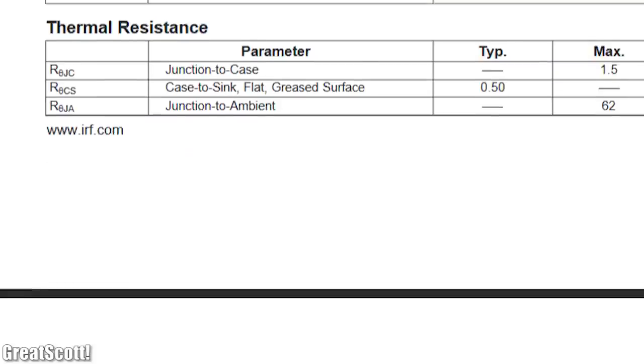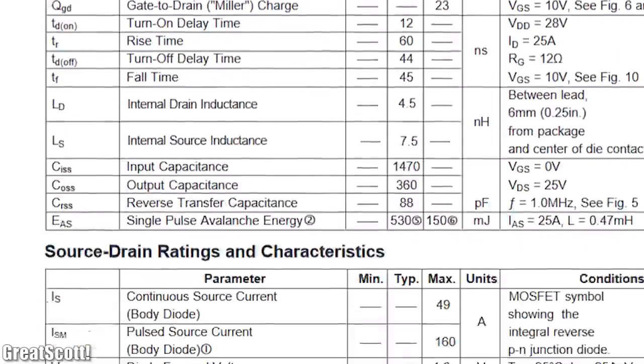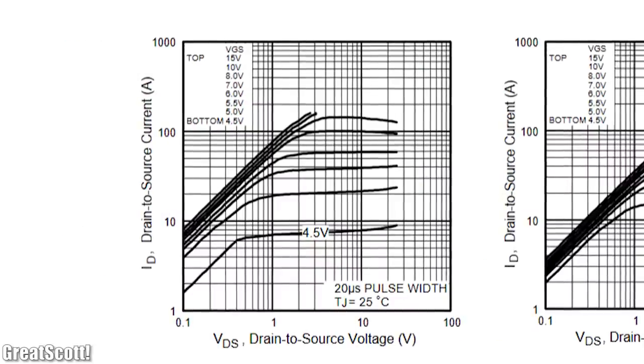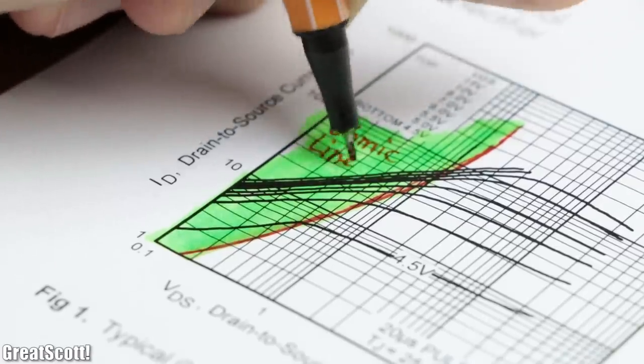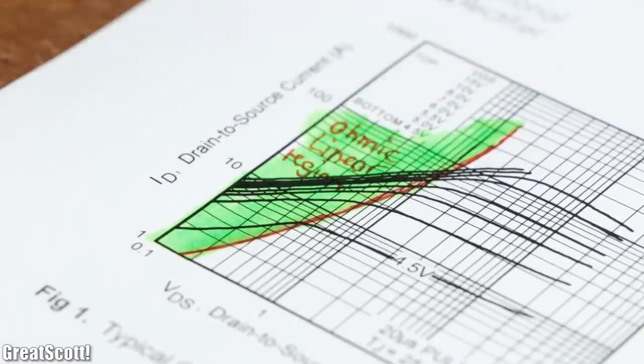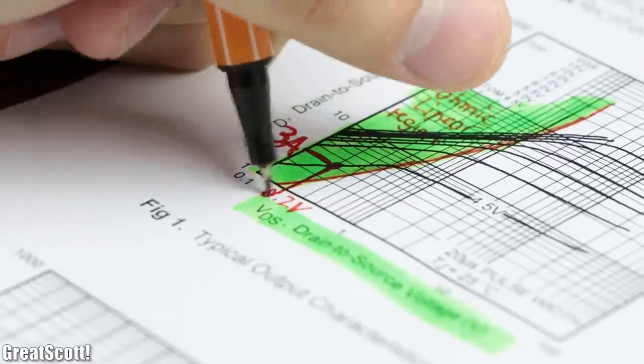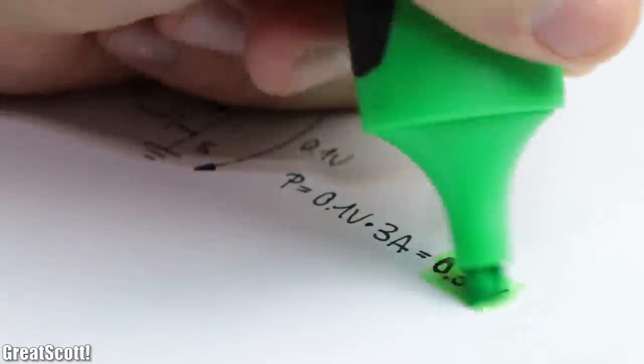By looking further through the datasheet we can also find the most important graph of the MOSFET's typical output characteristics graph. Usually here you want to utilize a MOSFET in its ohmic or linear region on the left side so that you get a minimal voltage drop across its drain to source path and thus have minimal power losses.